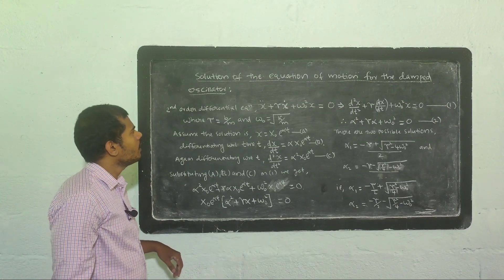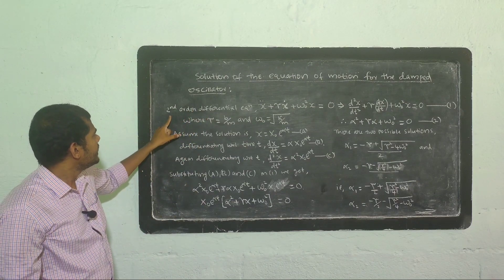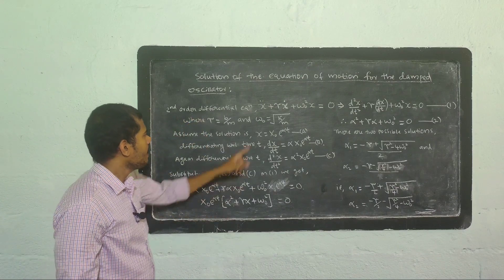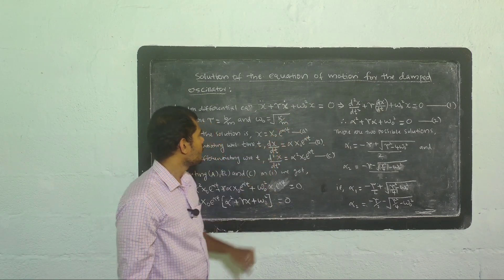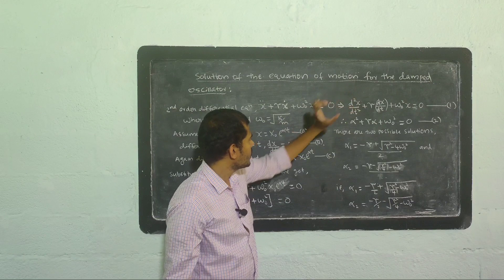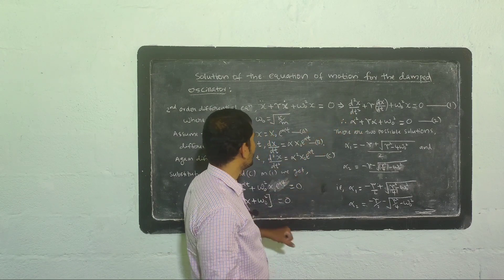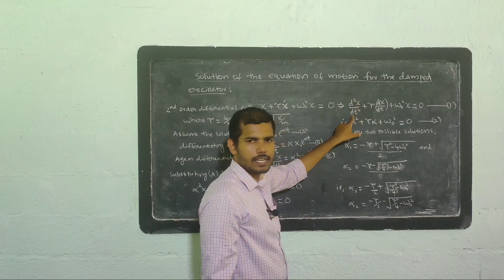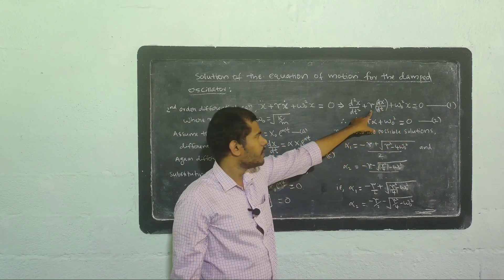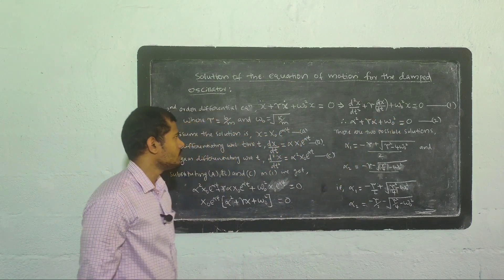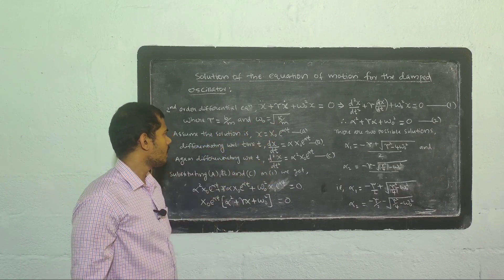Our next topic is the solution of the equation of motion for the damped oscillator. We study the second order differential equation: x double dot plus gamma x dot plus omega zero squared x equals zero. Here x double dot is d²x/dt² and x dot is dx/dt. Gamma is the damping constant, omega zero is the natural frequency, where gamma equals b/m and omega zero equals the square root of k/m.